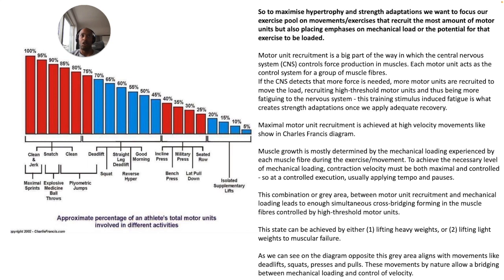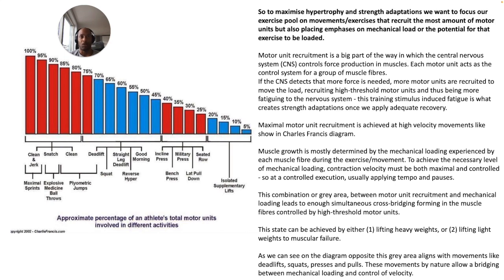Motor unit recruitment is a big part of how the central nervous system controls force production in muscles. Each motor unit acts as the control system for a group of muscle fibers. If the CNS detects that more force is needed, more motor units are recruited — recruiting high-threshold motor units, which is more fatiguing to the nervous system. This training-stimulus-induced fatigue is what creates strength adaptations once we apply adequate recovery. Maximal motor unit recruitment is achieved at high-velocity movements, as shown in the diagram.